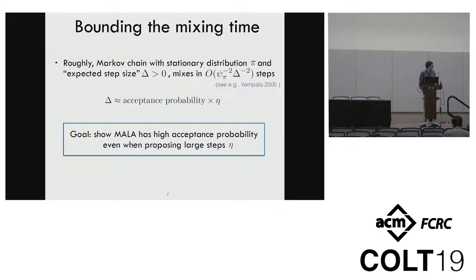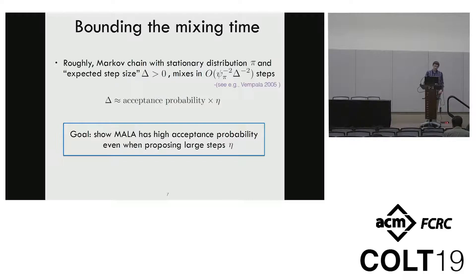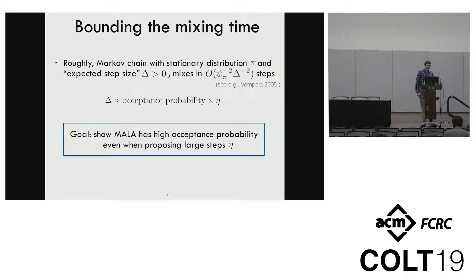For a reversible Markov chain, one can bound the mixing time by roughly one over the square of the Cheeger constant times one over the square of the expected step size of the Markov chain. In our case, the expected step size is roughly the acceptance probability of each step times the step size eta of our proposal. So our goal is to show that MALA has a high acceptance probability even when we propose large steps eta, and if we can do that, this will imply a fast bound on the mixing time.